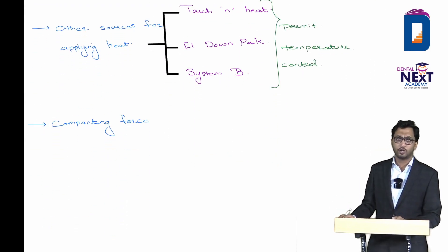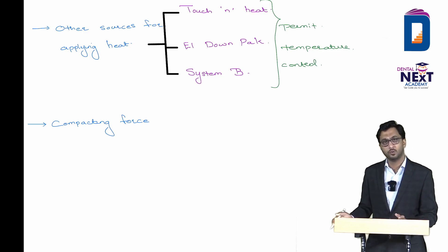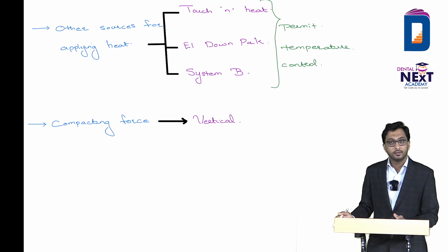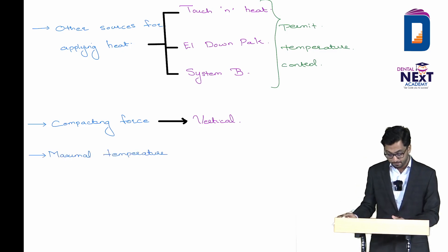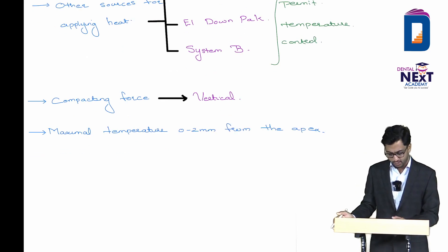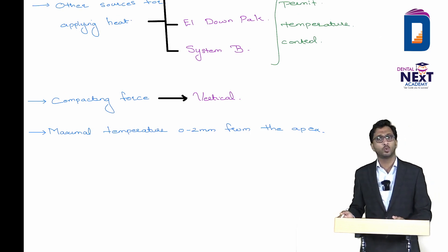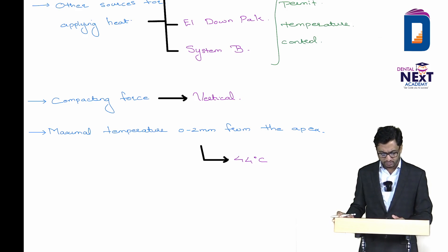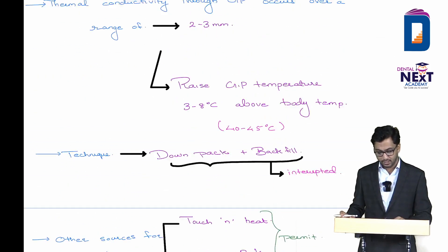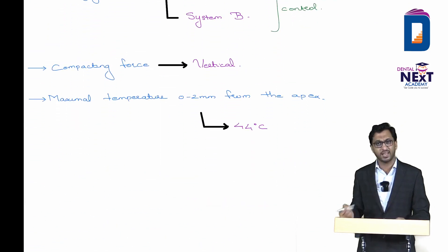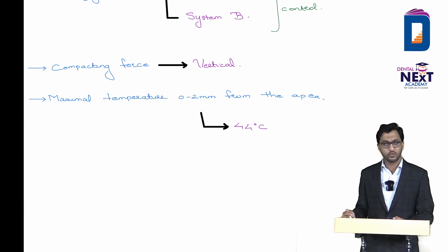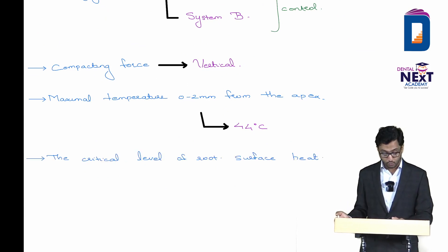The compacting force in warm vertical condensation is vertical. The maximum temperature noticed at 0 to 2 mm from the apex during warm vertical compaction is 44 degrees Celsius. This is an important MCQ value: maximum temperature at the apex during warm vertical compaction is 44 degrees Celsius.